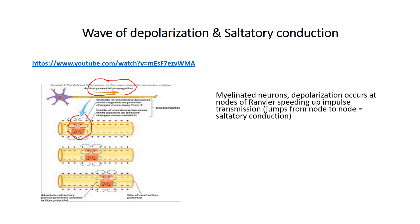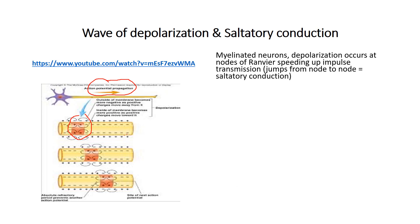One thing we should note is that in myelinated neurons — we have two types: myelinated that have myelin sheath, and unmyelinated. Myelinated neurons are found in the PNS, the Peripheral Nervous System. Sensory neurons will have myelin, and motor neurons will also have that myelin. This depolarization — where sodium comes rushing into the neuron making it more positive on the inside — in a myelinated neuron, occurs only at the nodes of Ranvier. The whole purpose of this myelin is to speed up the impulse transmission.